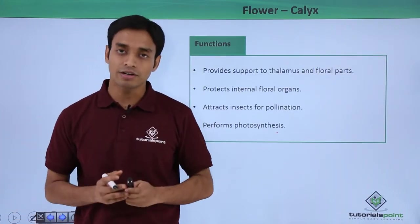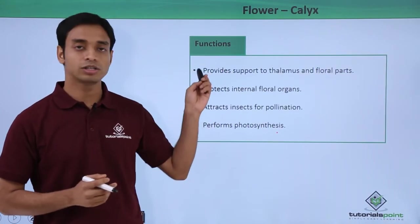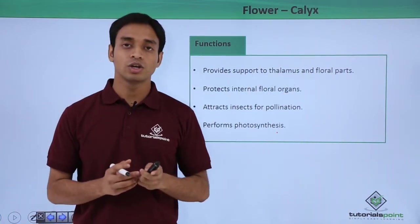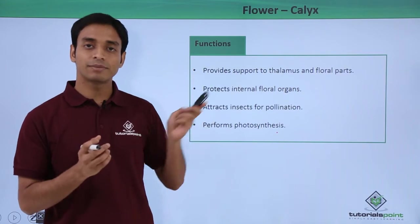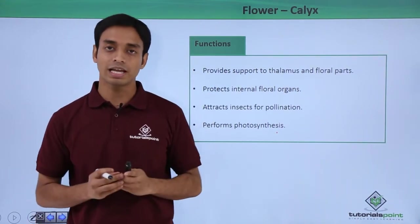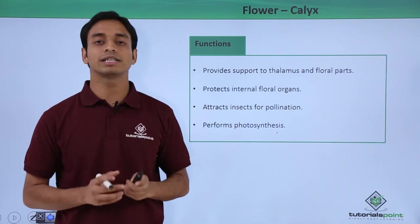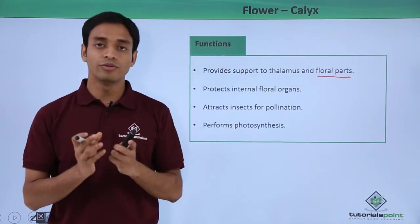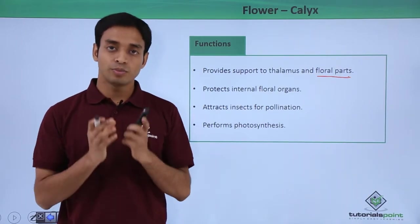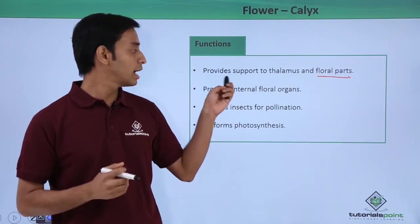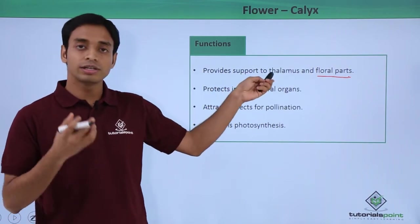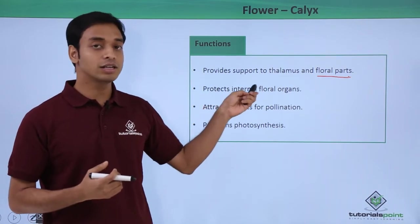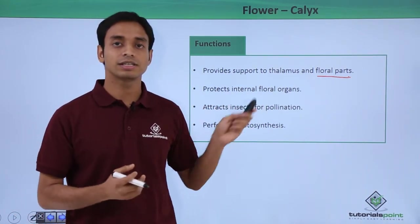Now let us discuss the important functions played by the sepals or the calyx. Sepals provide support to the thalamus and the floral parts. As you can see, the sepals are positioned near the thalamus, covering it, which helps in protecting the thalamus. Also very importantly, most of the floral parts such as the ovary, which contains the ovule, are supported and protected by the calyx.